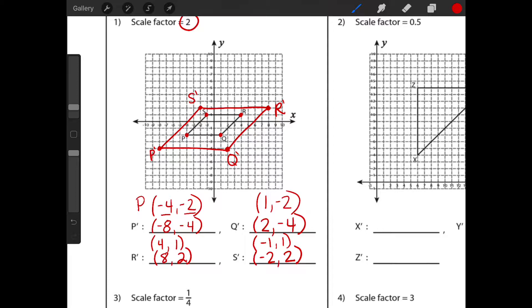So to make sure that we did it correctly, a double checking is if this is a true dilation, the side length should be doubled now because we did a scale factor of two. So this is one, two, three, four, five units long. My new one should be one, two, three, four, five, six, seven, eight, nine, 10 units long. So that proves that this is a scale factor of two dilation. So always double check that.